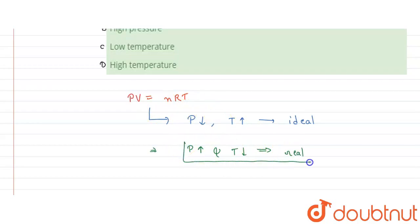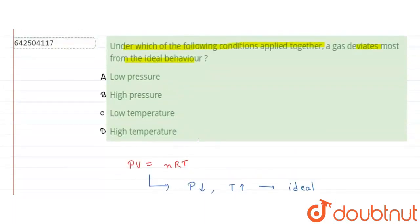So that means at high pressures and low temperature, gases don't behave ideally. That means option B, which is high pressure, and option C, which is low temperature, are the correct answer. So with this we complete our solution. Thank you.